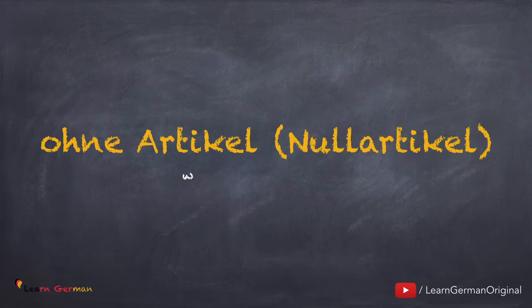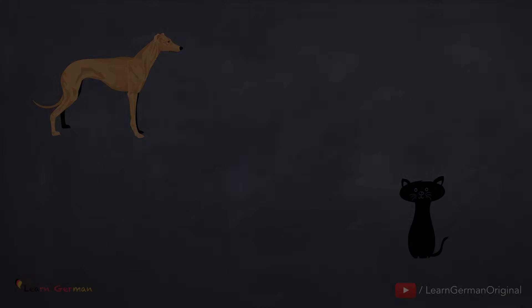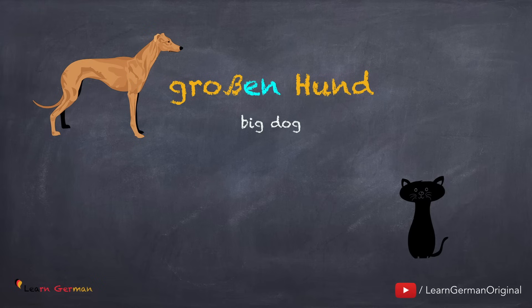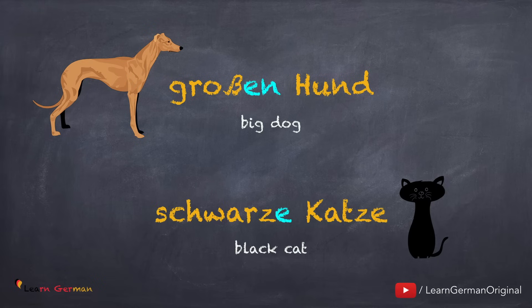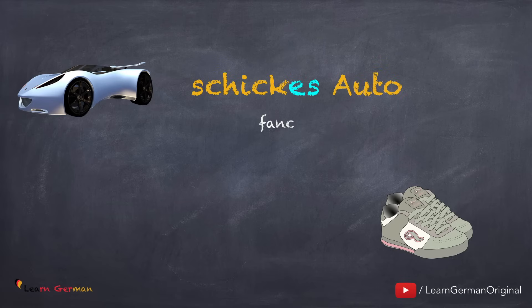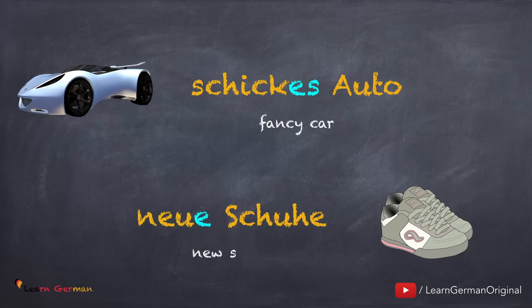Und jetzt der letzte Fall: Nullartikel oder ohne Artikel. Hier bekommt das Adjektiv im Maskulin die Endung -en: großen Hund. Für Feminin: schwarze Katze. Für Neutrum: schickes Auto. Und im Plural: neue Schuhe.